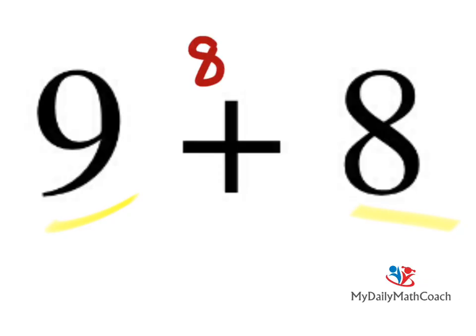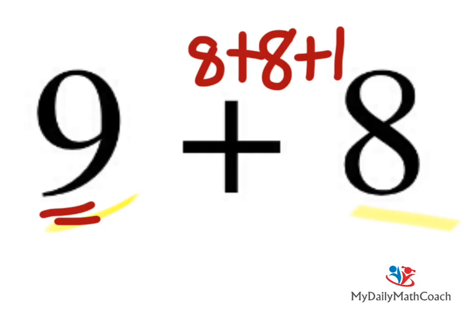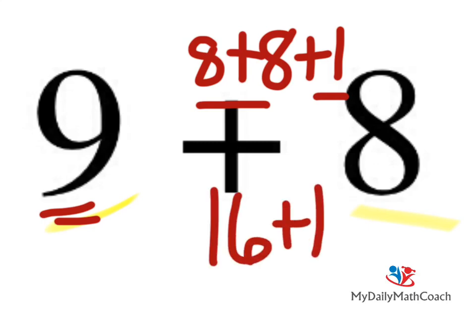If you thought eight plus eight, you are absolutely correct. See, eight plus eight plus one, because we're adding eight plus nine, would be doubles plus one. So eight plus eight, we know, is sixteen. So sixteen plus one is seventeen. Seventeen would be your answer to this problem. Doubles plus one.